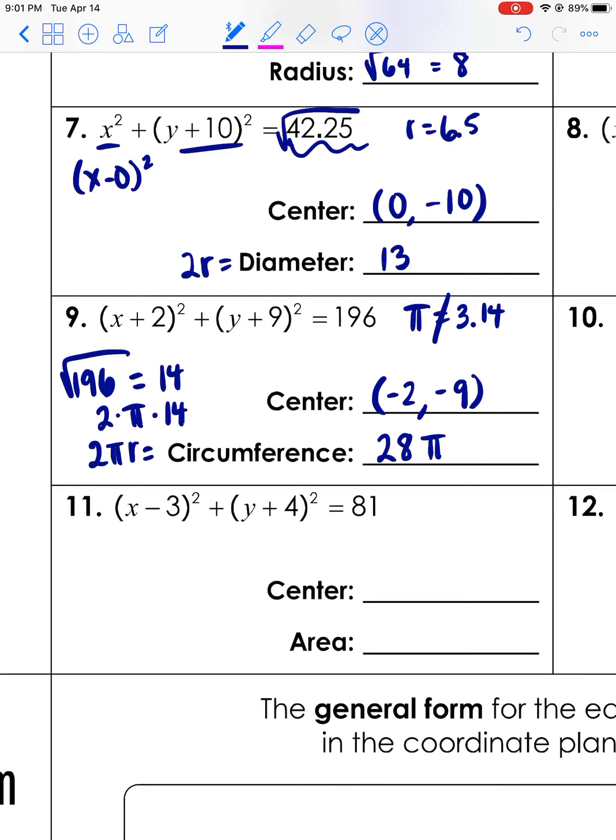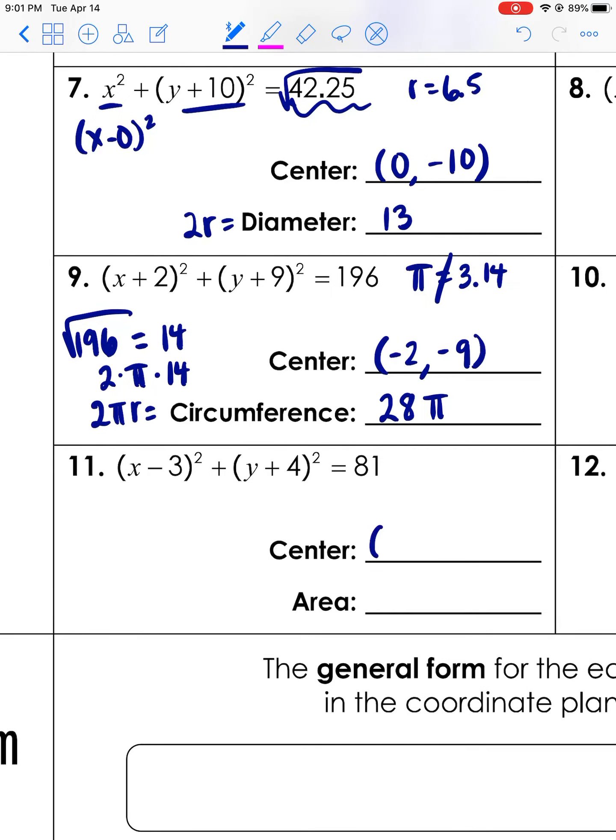Last one - center is positive three, negative four. We're asked for the area. First we need to find the radius. The radius is the square root of 81, or 9. The formula for the area of a circle is π times the radius squared, so we really did not need to take the square root because we would have ended up with the same thing anyways. So in this case it is 81π, and I want you to leave π as π just as we did in the previous question.